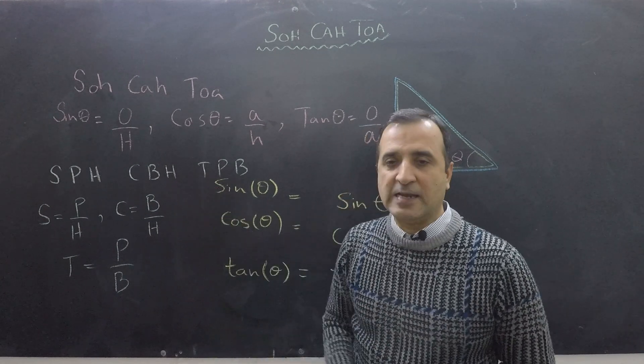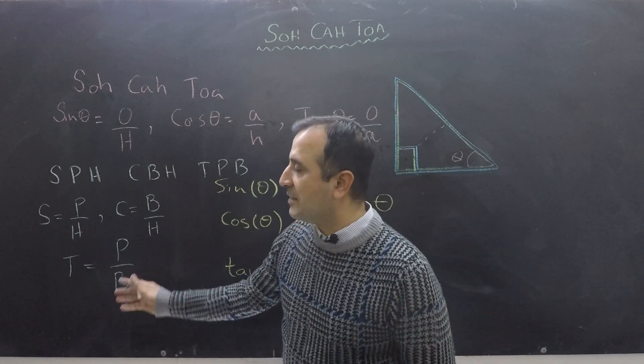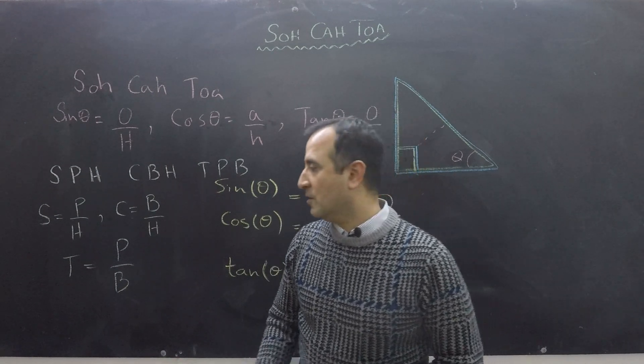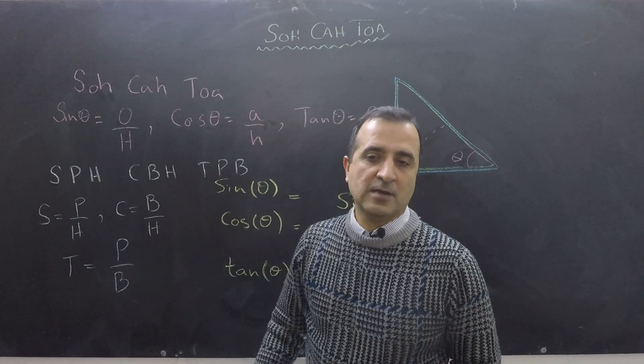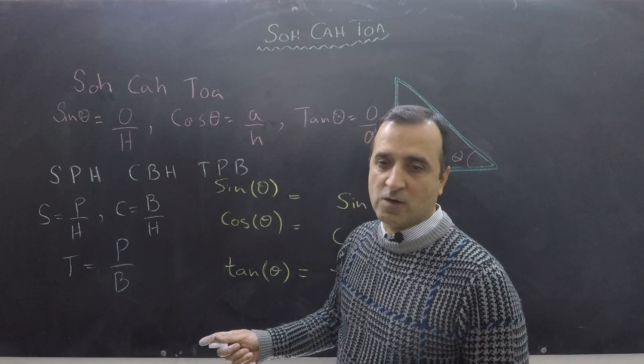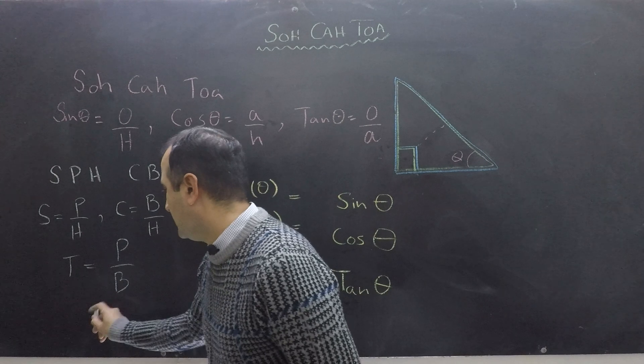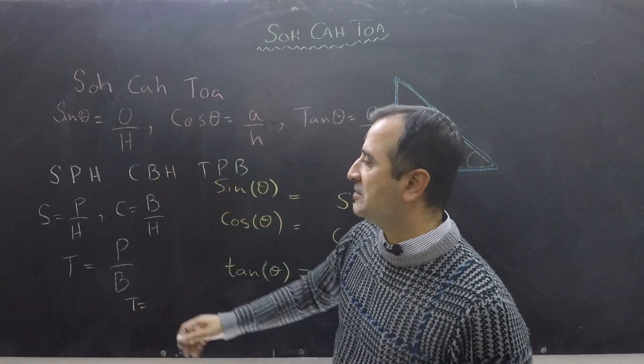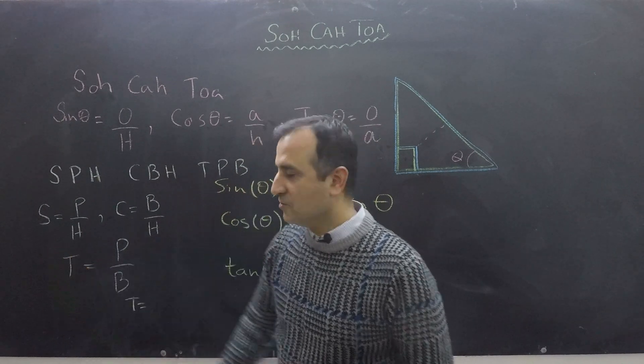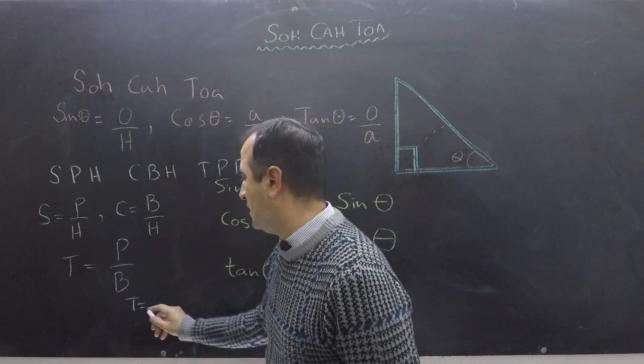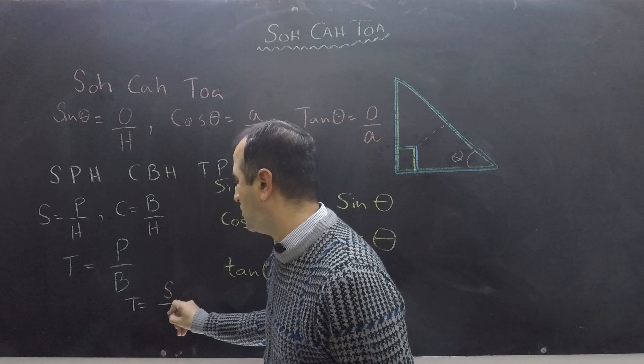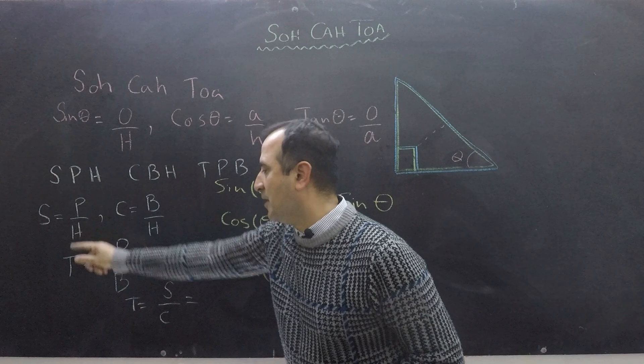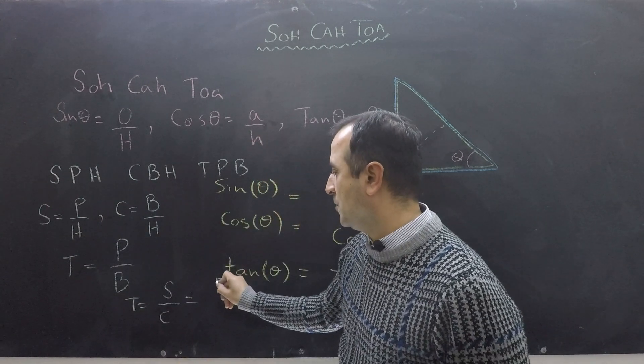Now from these formulas we can get that tan basically can be made from sine and cos. So tan is basically sine over cos. And we can just verify if this is true or not. So tan theta equals sine theta over cos theta. Now let's put formula of sine theta. Sine theta is perpendicular upon hypotenuse.